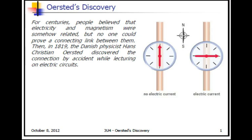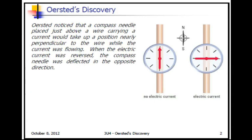Orsted discovered this by accident while lecturing about electric circuits. He was teaching and had a magnetic device with him, a compass. He noticed that the compass needle placed just above a wire carrying a current would take up a position nearly perpendicular to the wire only when current was flowing. When the electric current was reversed, the compass needle was deflected in the opposite direction.